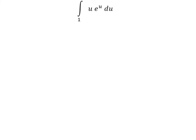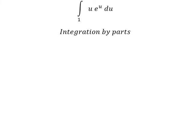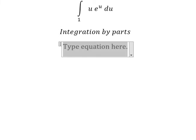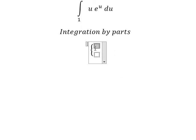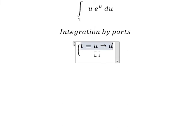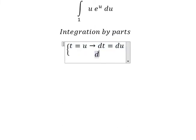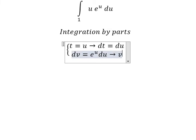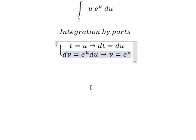For integration by parts, I set t equal to u, so dt equals du. Then dv equals e to the power of u du, and integrating that gives v equals e to the power of u.